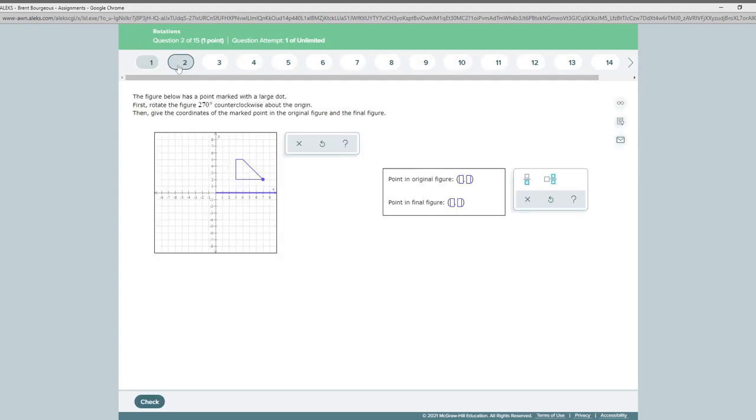You might be asked to do a rotation of 270 degrees clockwise about the origin, then give the coordinates of the marked point in the original figure. Well, first of all, the marked point we have here is 7 comma 2, so we would type 7 and a 2 in our first spot.